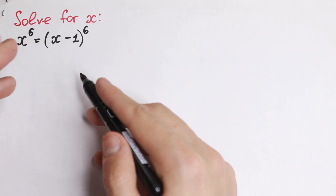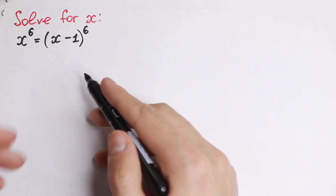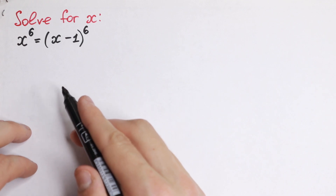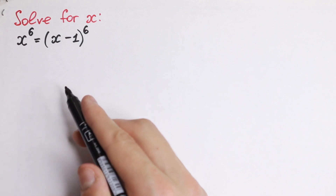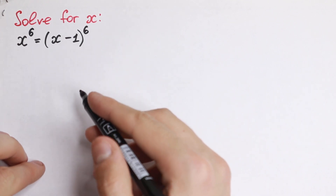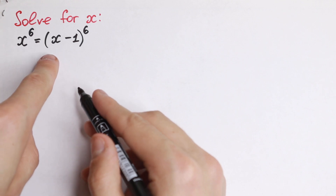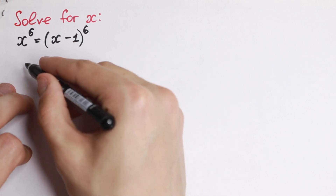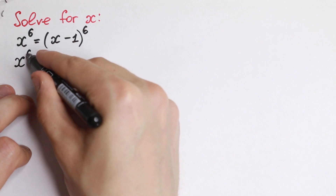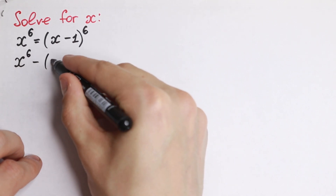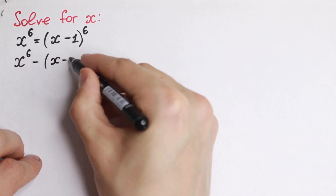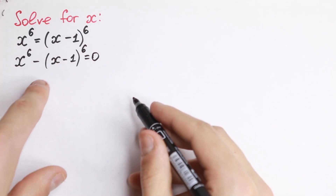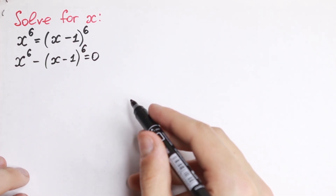As you can see we have a 6th power, so it's not an easy equation and we need to find a really good approach. I'm going to show you my method of solution. At first, we bring the x minus 1 to the sixth power to the left hand side, giving us x to the sixth power minus x minus 1 to the sixth power equals zero.